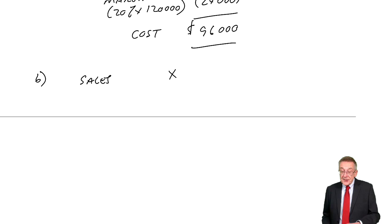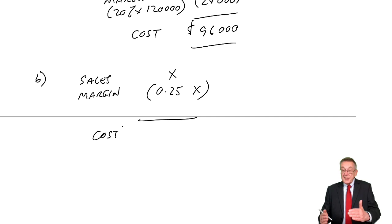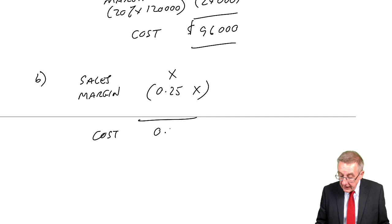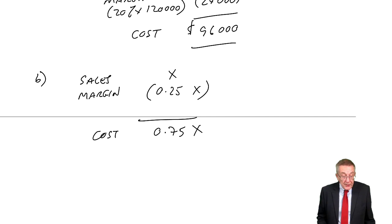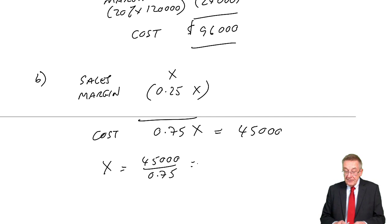If the sales are X, the margin, the profit, will be 25% of X or 0.25 of X. And therefore, the cost, the sales less the profit, 1X minus 0.25X is 0.75X. We know what the cost is. It's equal to 45,000. And so, X, 45,000 divided by 0.75, which is the sales, remember, at 60,000.